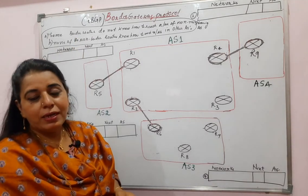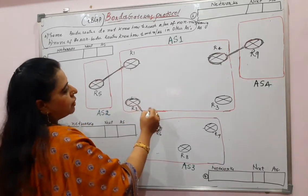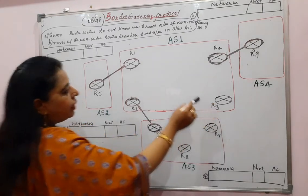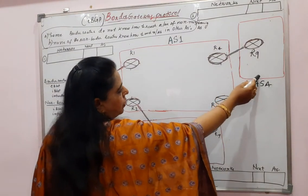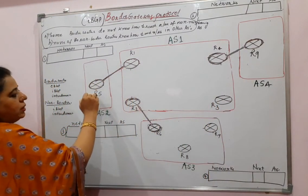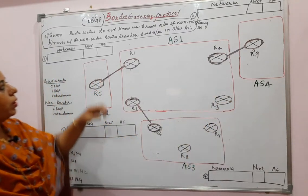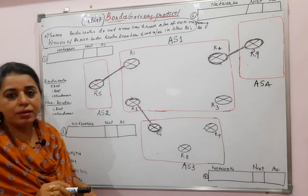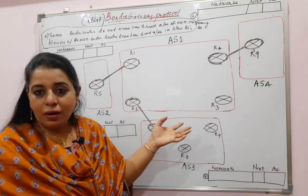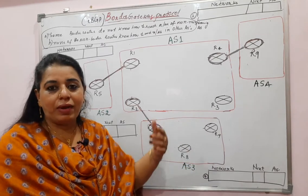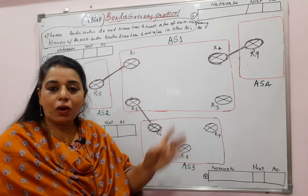The second problem, which I explained at the end of the previous session, is that none of the non-border routers know how to reach networks of other autonomous systems at all. In AS1, R3 is a non-border router and does not know how to reach networks in other autonomous systems, while R4, R1, and R2 do. To address this, the IBGP variant has to be installed on all routers — border routers as well as non-border routers — so that sessions get established between all routers.